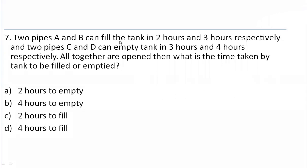Two pipes A and B can fill the tank in 2 hours and 3 hours respectively — both are filling pipes. Two pipes C and D can empty the tank in 3 hours and 4 hours respectively — both are negative pipes used to empty the tank. If all pipes are opened together, what is the time taken to fill or empty the tank?